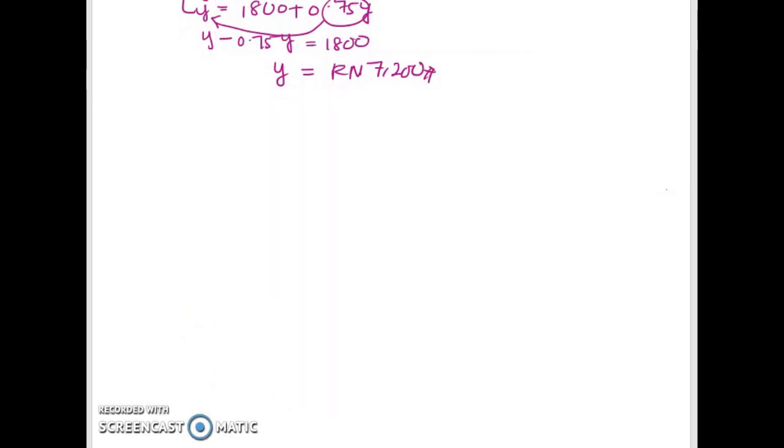So under this approach, the equilibrium is achieved when I plus G equals to S plus T. How would you get the S function? Remember that the S function is the mirror for C function.